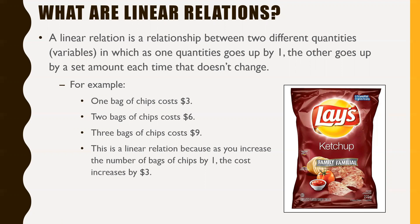Think of a bag of chips. If you had one bag of chips, let's say that costs $3. Two bags costs $6. Three bags costs $9. As you increase the number of bags of chips by one, the cost increases by three. So it's a linear relation in that as one variable — the number of bags of chips — increases by a certain amount, the other variable — the cost — increases by a consistent amount each time.